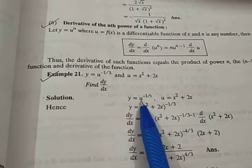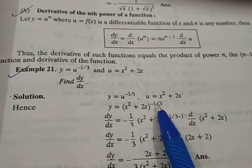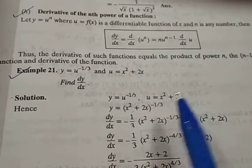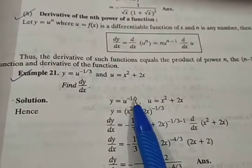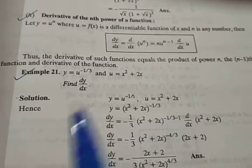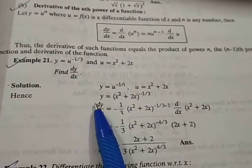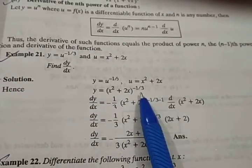But you are given that y has this value and u has this value. So that means the y which is given to us is equal to, we can put the value of u in that place. So x square plus 2x, this whole raised to power minus 1 by 3. You can write it like this, just putting the value of u here. So dy by dx you are finding, is equal to.